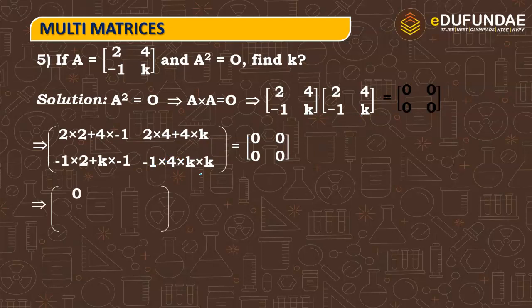So equate here. So here first entry we solve, 0 will come. Second entry will be 8 plus 4k, third entry will be minus 2 minus k and fourth entry will be minus 4 plus k square, which will be equals to 0, 0, 0, 0.